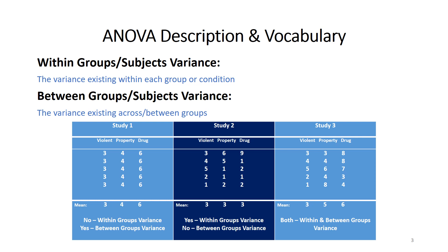There is another type of variance that does occur in study one — the between groups variance, which is the variance existing across or between the groups. How do we conceptualize that? We compare the means. In study one, within each group they all look the same, but across the three groups there is a clear difference. So there is no within group variance, but yes, there is between group variance in study one.